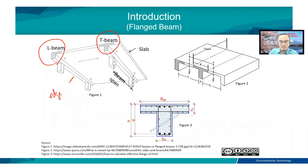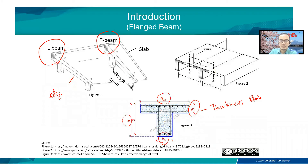Here are the key definitions. H_F is the thickness of the slab. B_effective is the effective flange width. B_W is the width of the beam, and D is the distance from the top surface of the beam to the center of the main reinforcement.